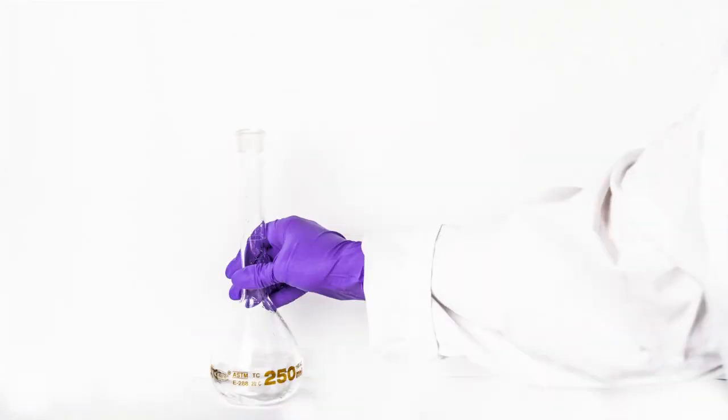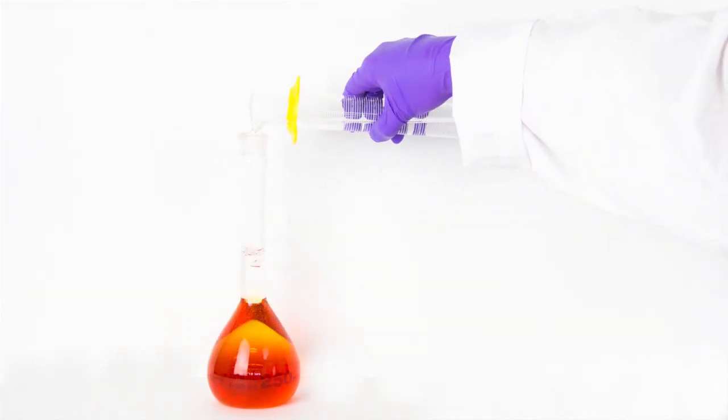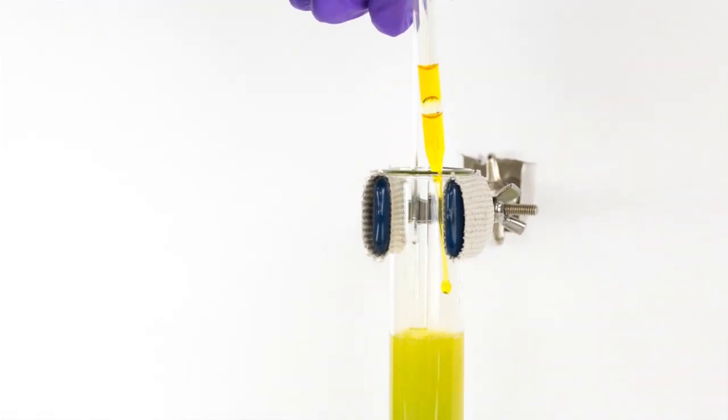First we made bromine water. Quite simply this is molecular bromine dissolved in water. Then we dripped the bromine water onto the tomato juice to initiate this colorful effect.